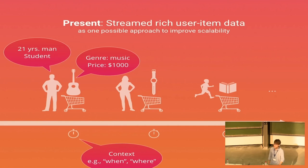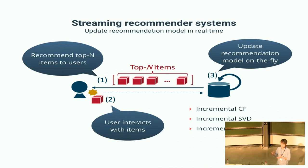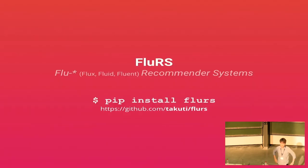I basically focused on this topic and implemented a Python package, and wrote some research papers. I defined this topic as streaming recommendation systems. As usual, a recommender first recommends top-N items to users based on a recommendation technique. Importantly, user interactions can be immediately fed back to the model, and the model is incrementally updated on the fly. This is the key difference from classical approaches. My package, Flurs, implements streaming recommendation techniques and can be installed via pip. I also have a GitHub repository.